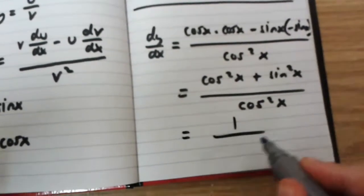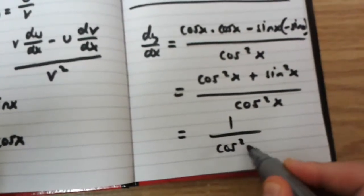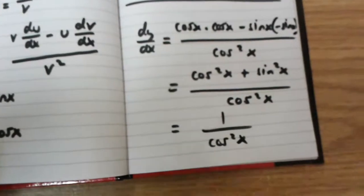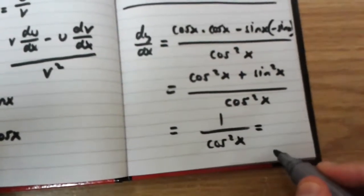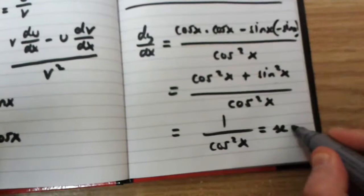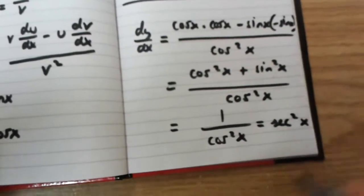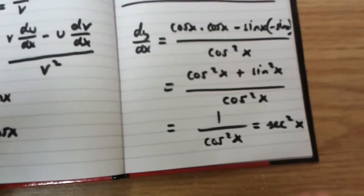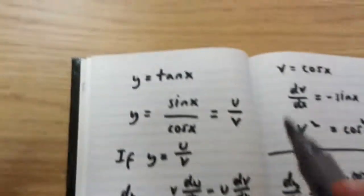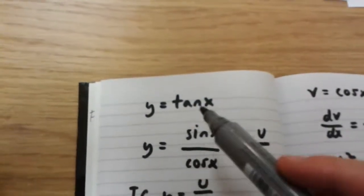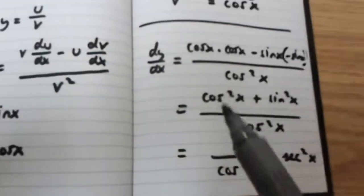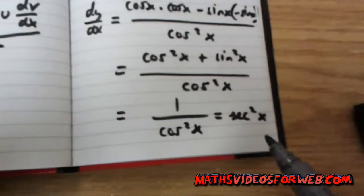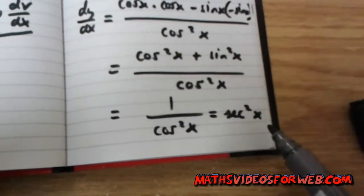So, we have 1 over cos x squared. And this is actually equal to sec x squared. So, we know that if y is equal to tan x, dy over dx is equal to sec x squared.